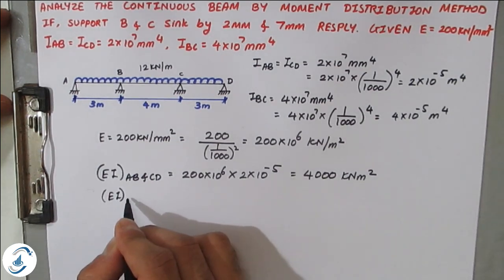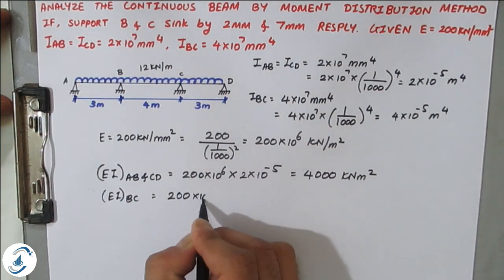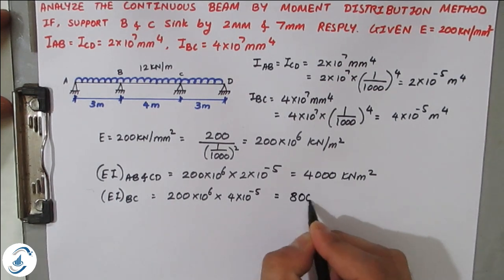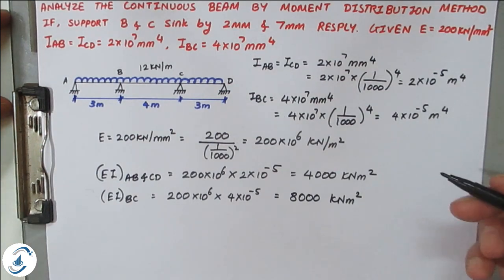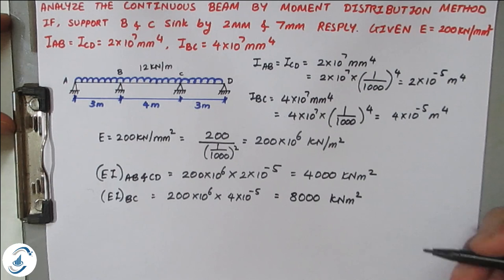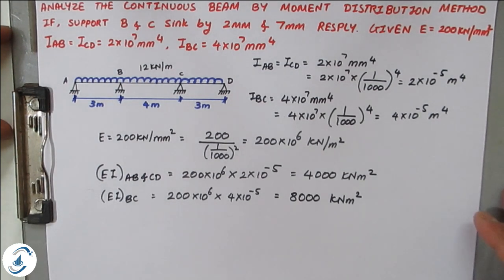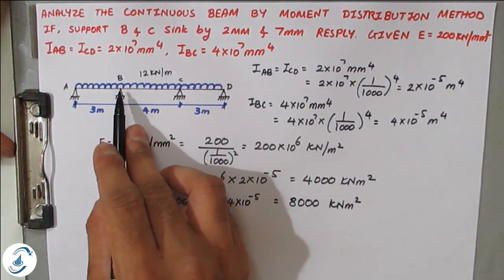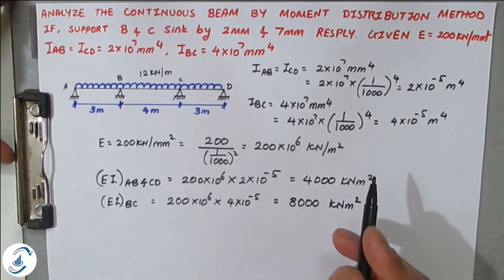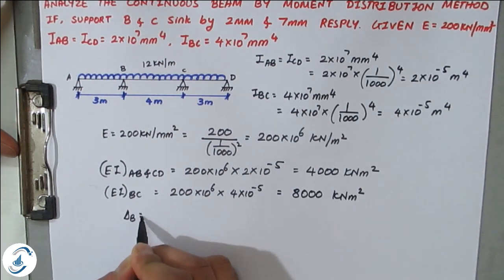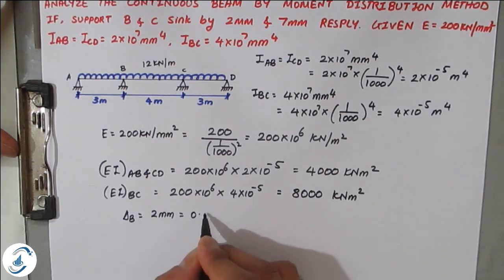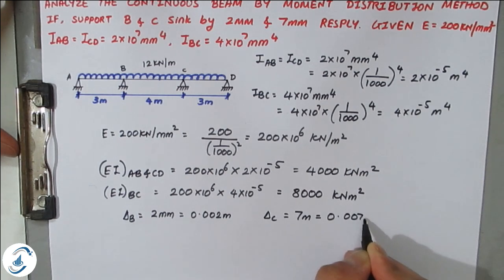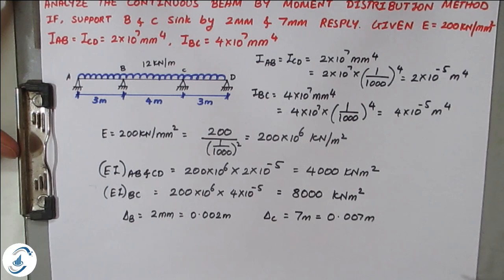Similarly, EI for BC: 200×10⁶ × 4×10⁻⁵ = 8000 kN·m². After getting EI values in proper units, we note where the sinking is given. Support B is sinking by 2 mm (δB = 0.002 m) and support C is sinking by 7 mm (δC = 0.007 m).